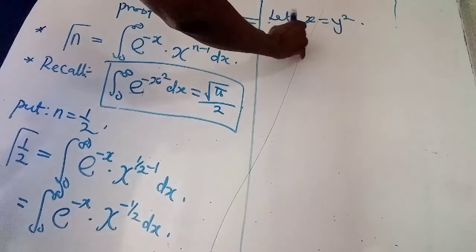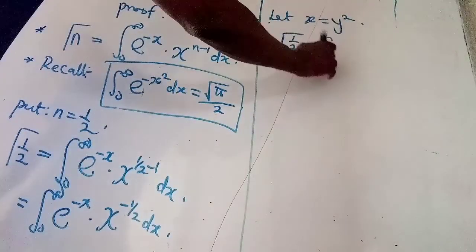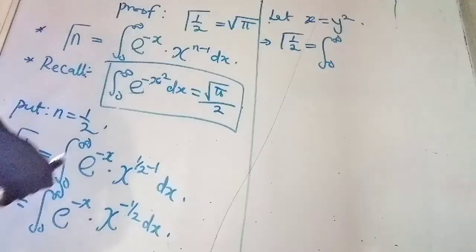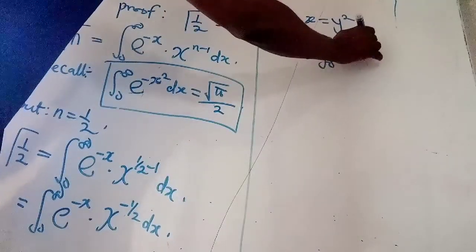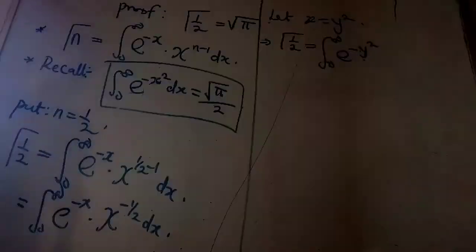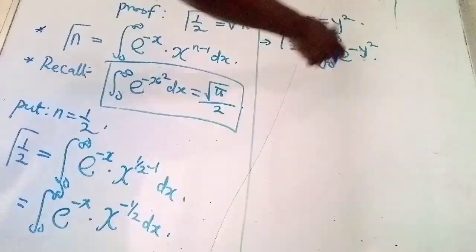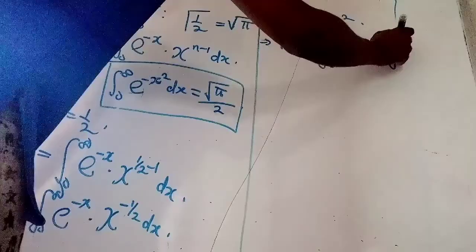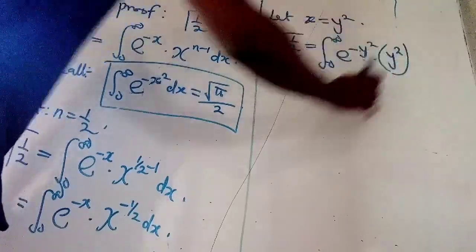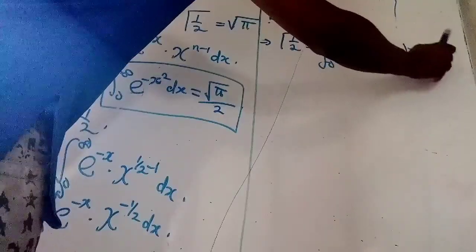So that means, gamma of half will now be equal to integral from 0 to infinity e to negative y squared. Instead of writing x now, I am replacing x with y squared, multiply by y squared, then raised to power negative half, dx.